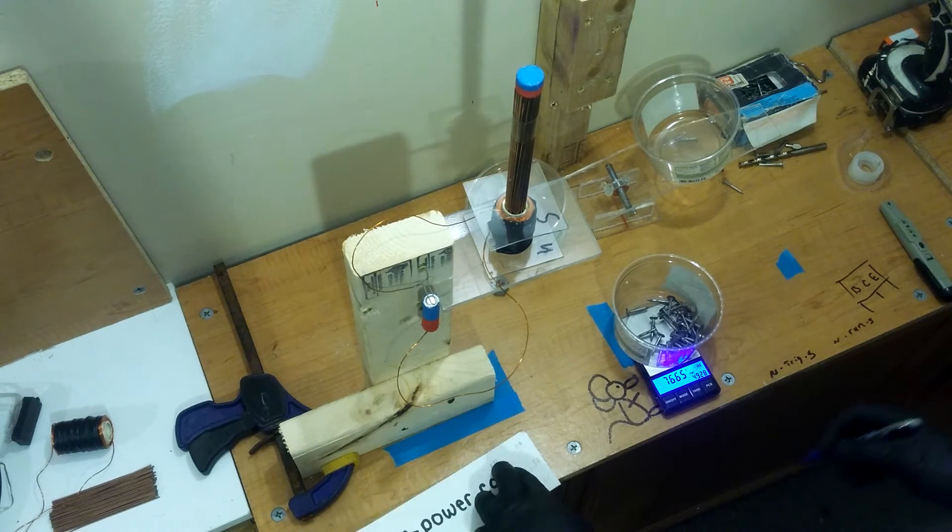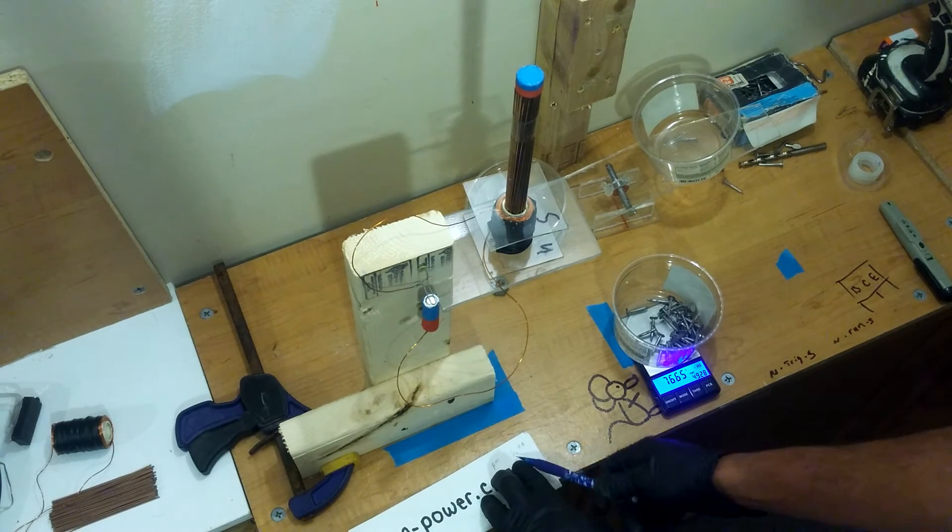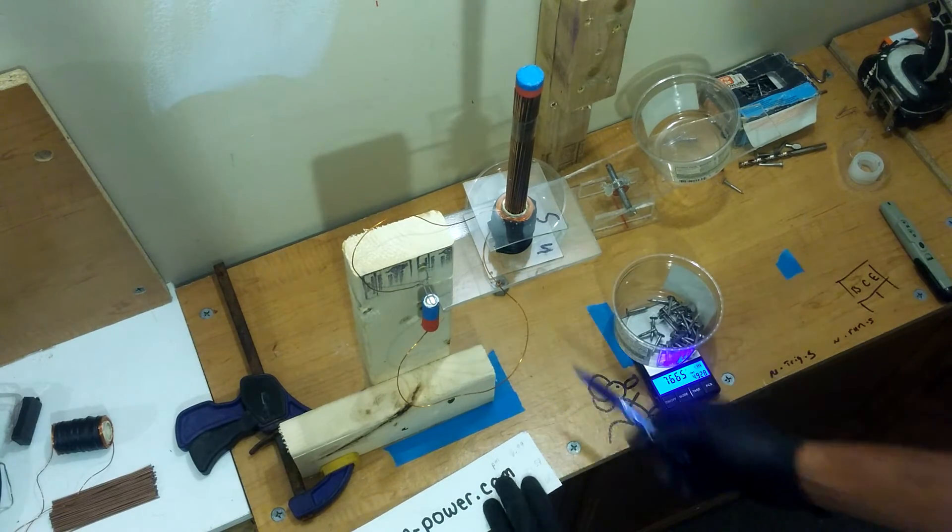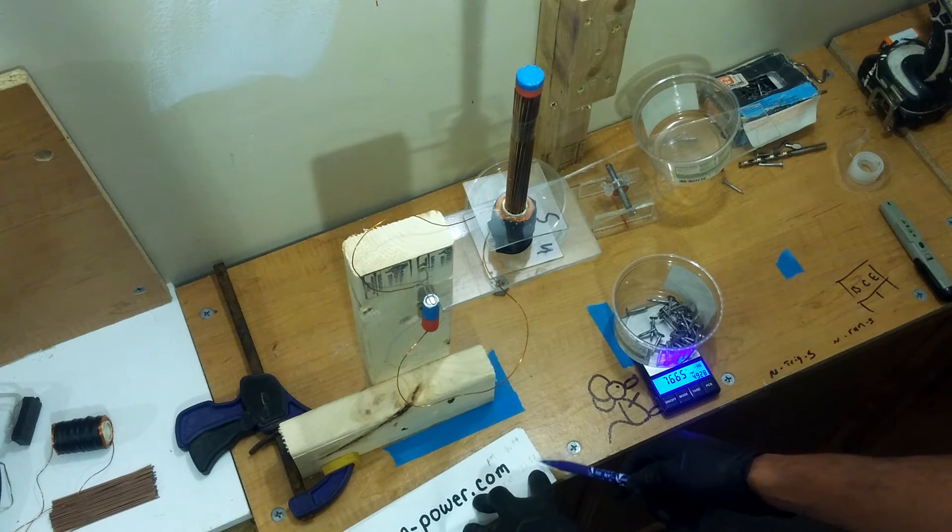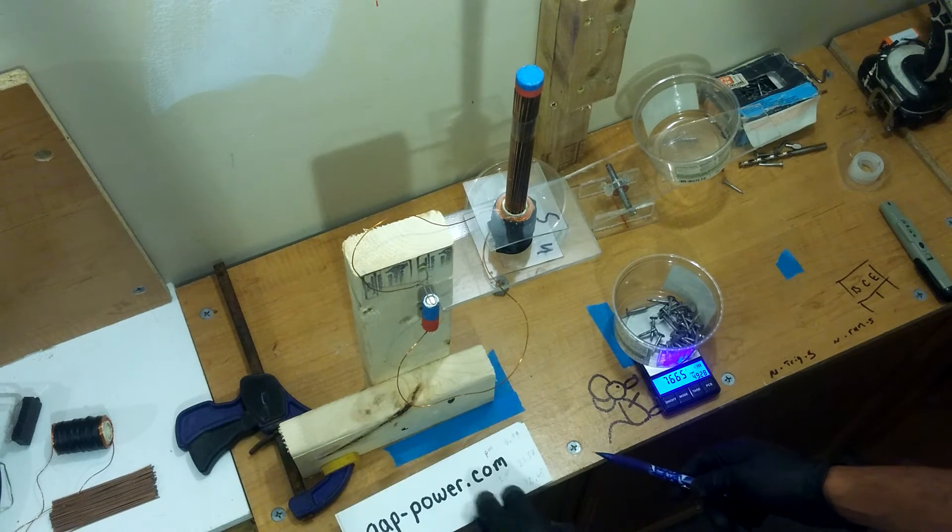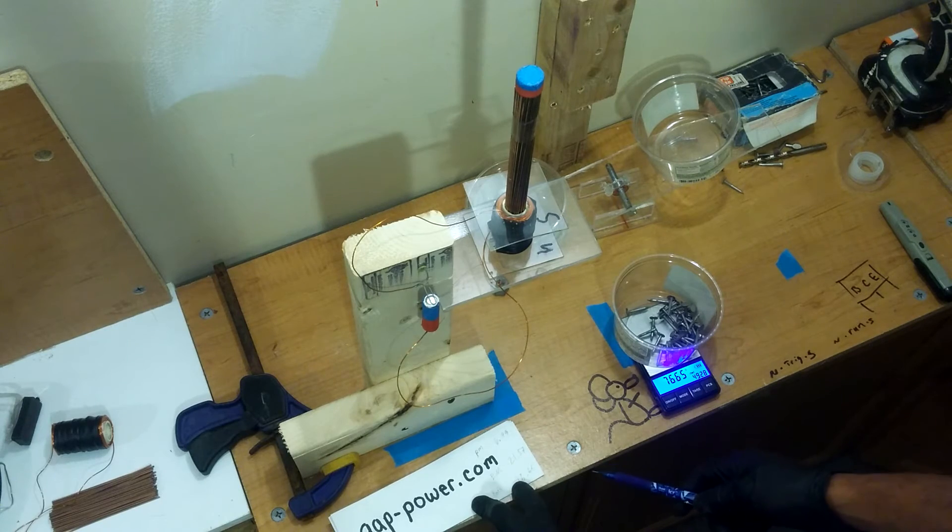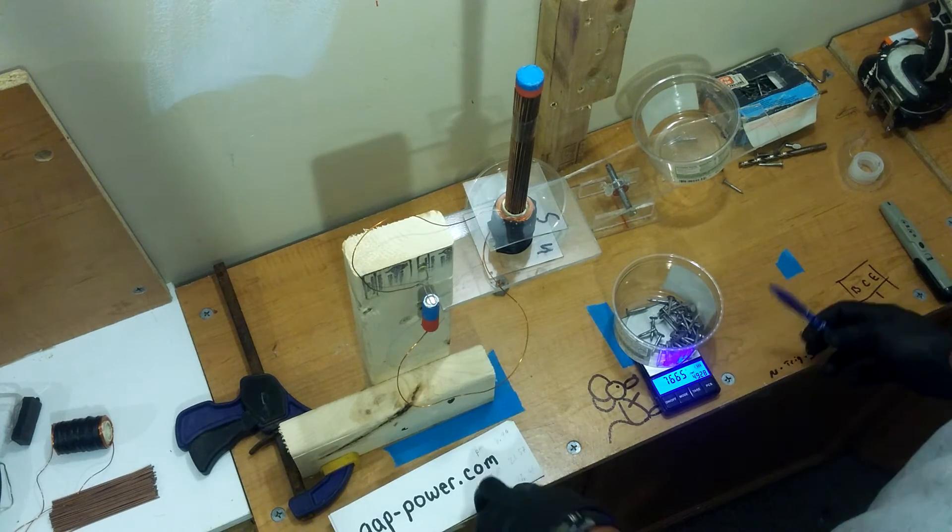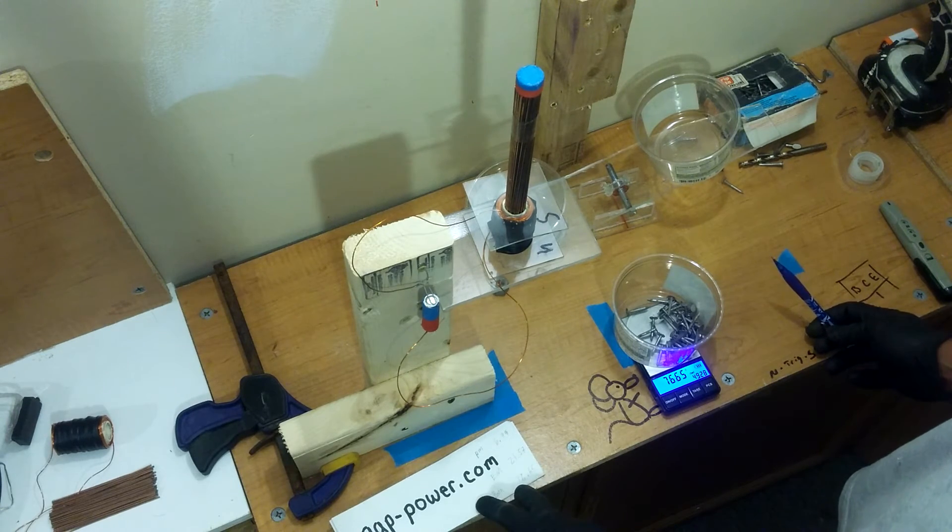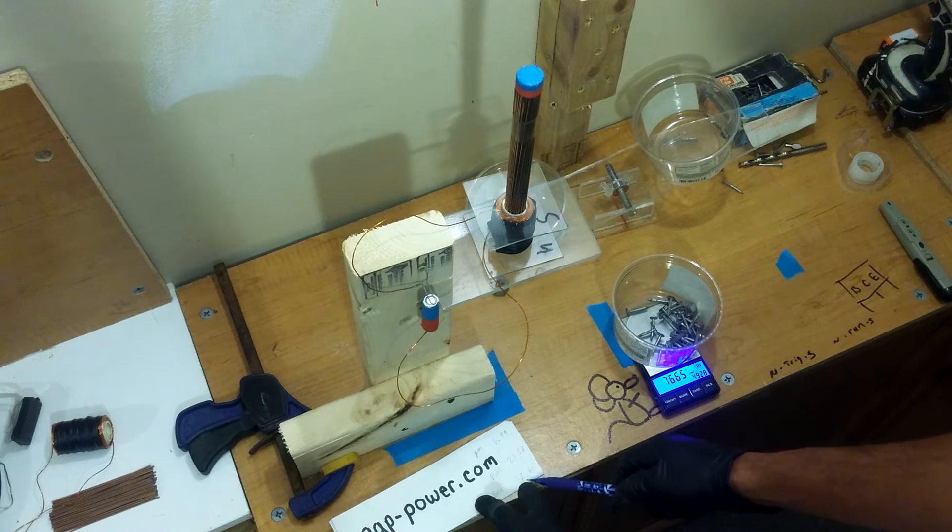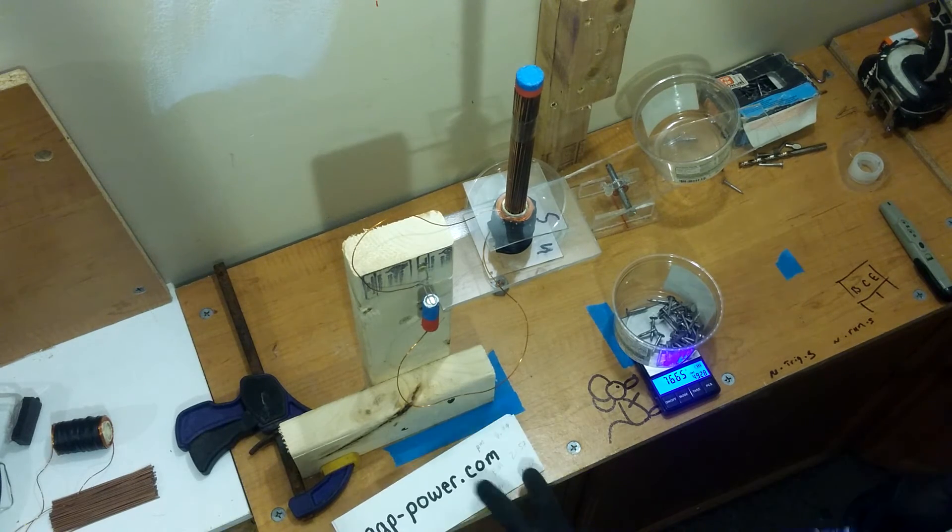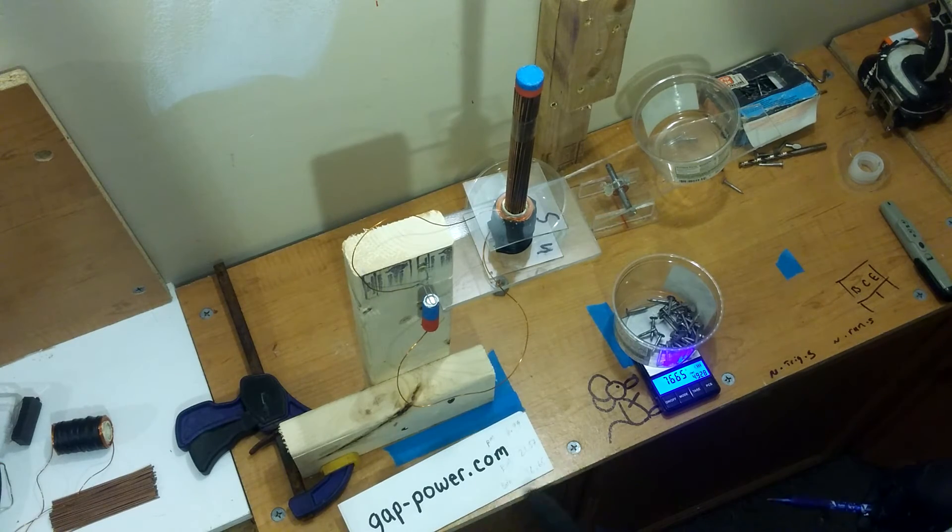So, permanent magnet by itself, 6.99. The electromagnet by itself, 21.57. And then both of them together, which would be your magnetic amplification over at gap power, getting 76.65. Working together wins.